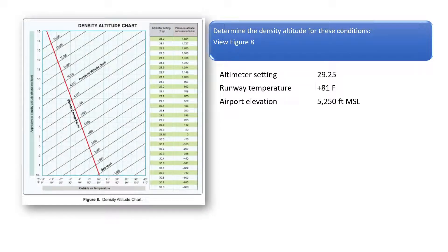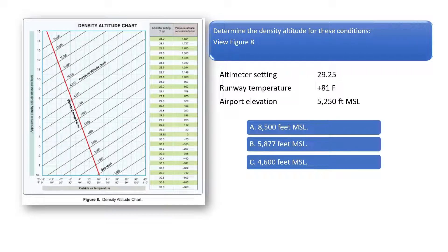Like the first problem in the video, we need to interpolate to find the pressure altitude conversion factor. See from the chart the corresponding pressure altitude conversion factors for the altimeter settings of 29.2 and 29.3.